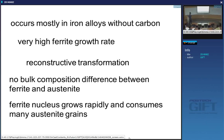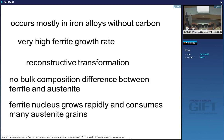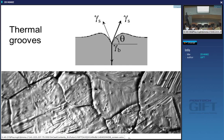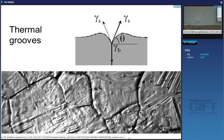As soon as nucleation starts, the grains grow so rapidly that they actually consume many austenite grains — a single ferrite nucleus will consume many austenite grains. This means that the ferrite grain size will be much bigger than the austenite grain size, which is not normal. So can you think of why it's called massive? Because the ferrite grains are huge. It becomes very difficult in such experiments to measure the austenite grain size because the reaction is so fast that you only get ferrite.